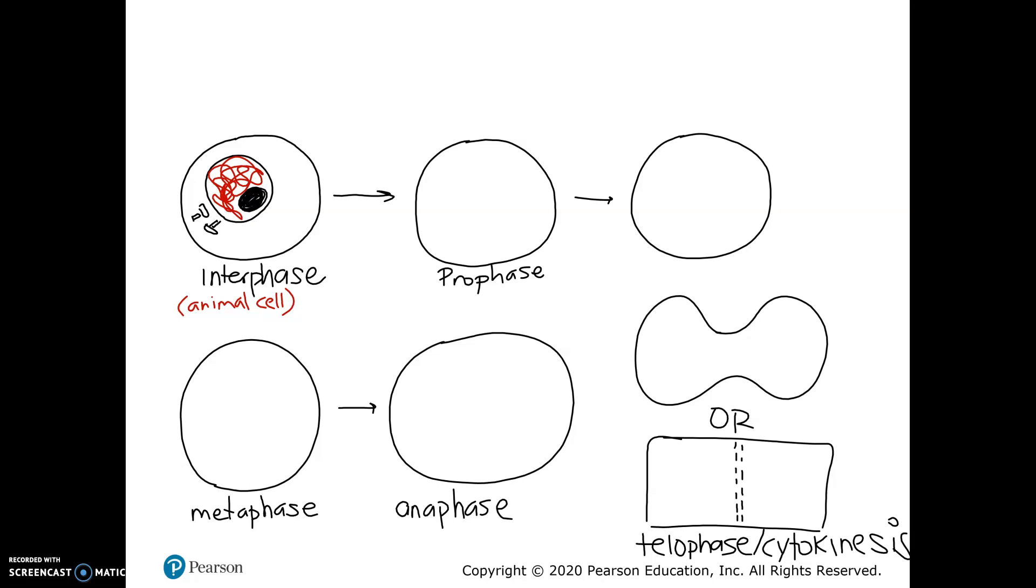So just a couple of reminders. Mitosis is a way that cells make exact copies of themselves. Eukaryotic cells make exact copies of themselves, like your skin cells, your blood cells. This is for growth of the organism, replacing cells that die, allowing organisms to reproduce asexually.